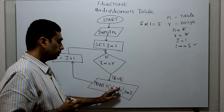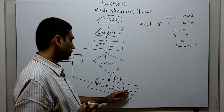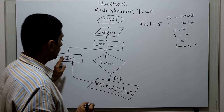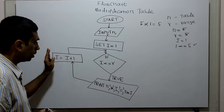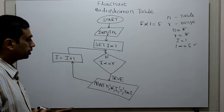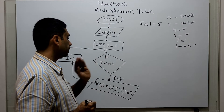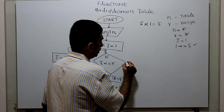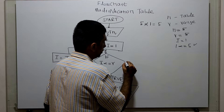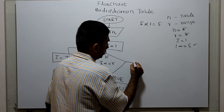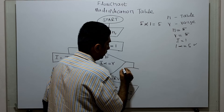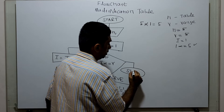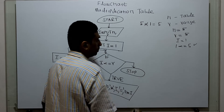So i will get incremented, it will be checked, and the process will go continuously until i less than or equal to r is true. If i less than or equal to r is false, I am ending this flowchart with the logical stop.